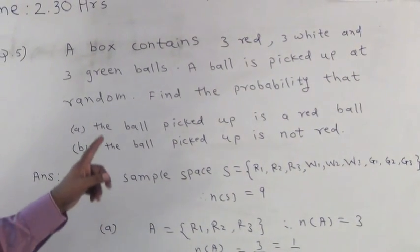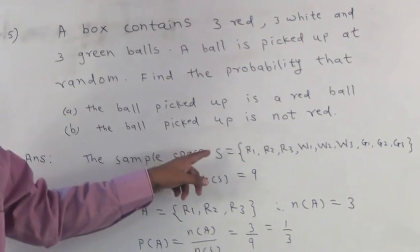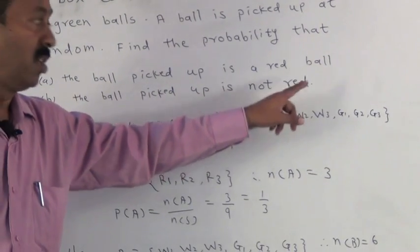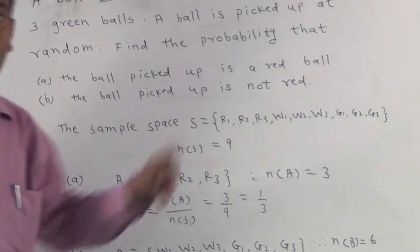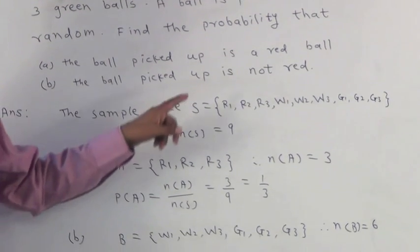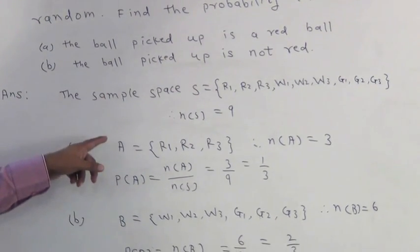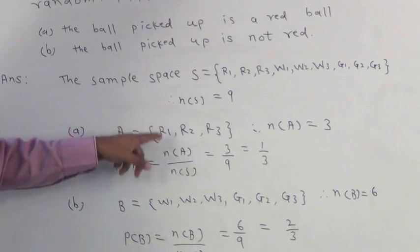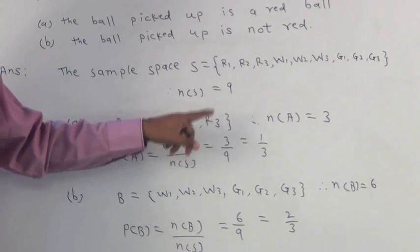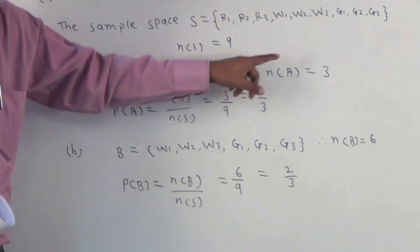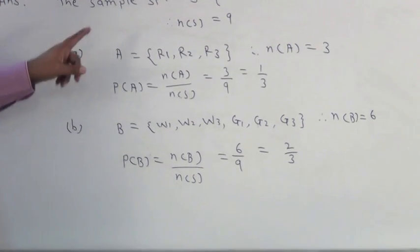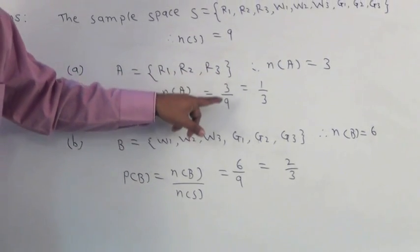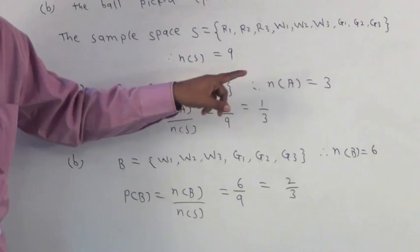The sample space for this particular question is S is equal to R1, R2, R3, W1, W2, W3, G1, G2, G3. Total number of sample points is equal to 9. Let A be the event that ball picked up is red. A is equal to R1, R2, R3. Total number of sample points for A is 3. Probability of event A is equal to N of A upon N of S, that is 3 upon 9 is equal to 1 upon 3.